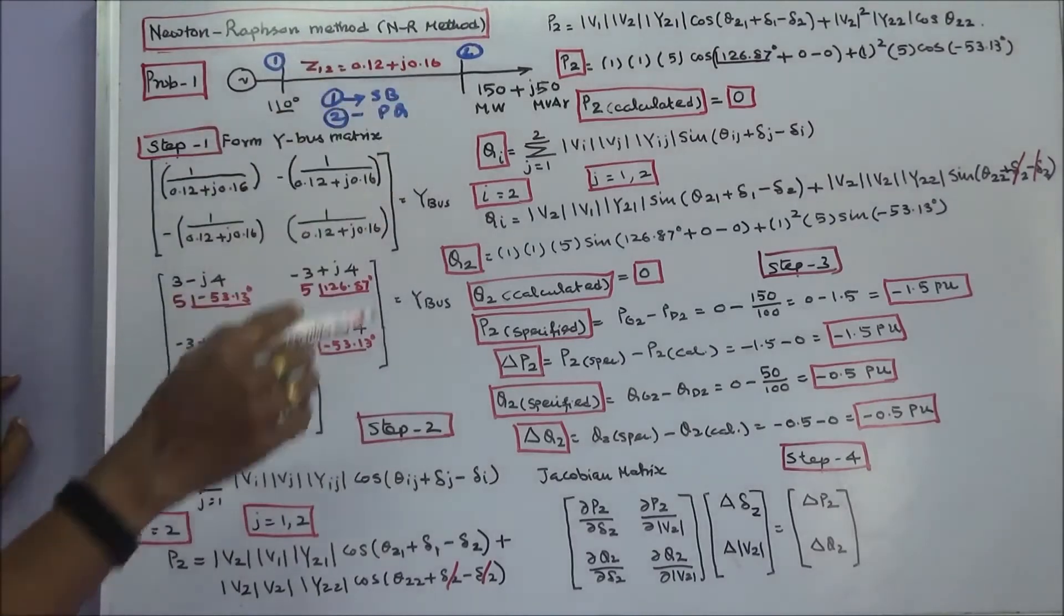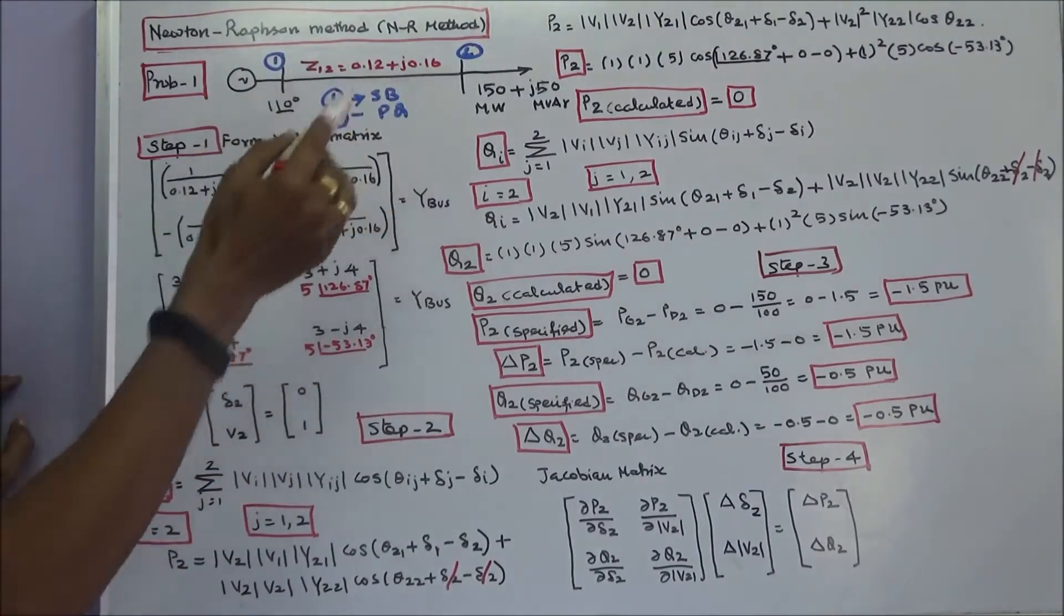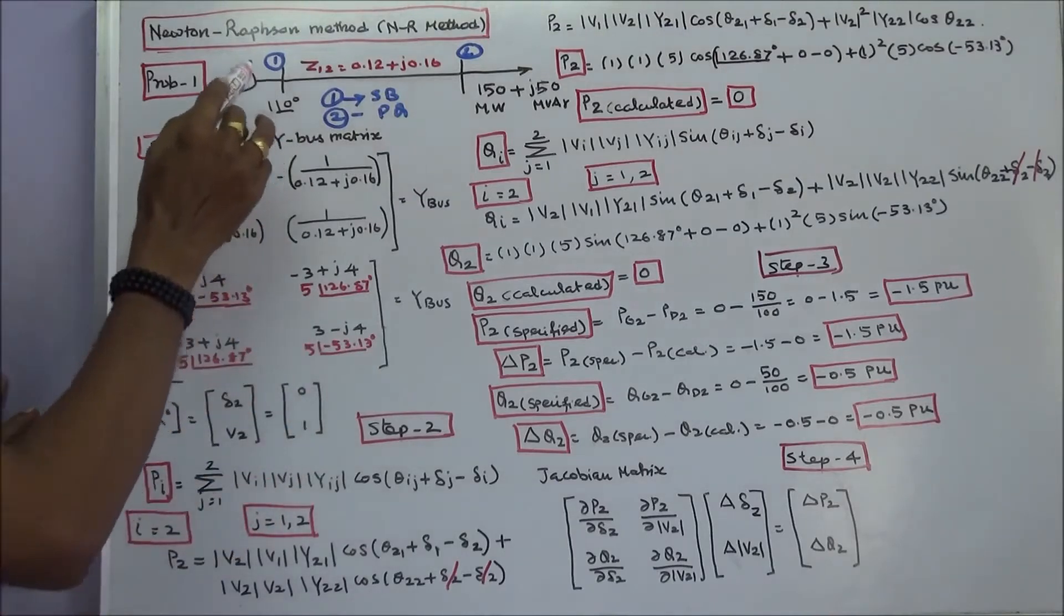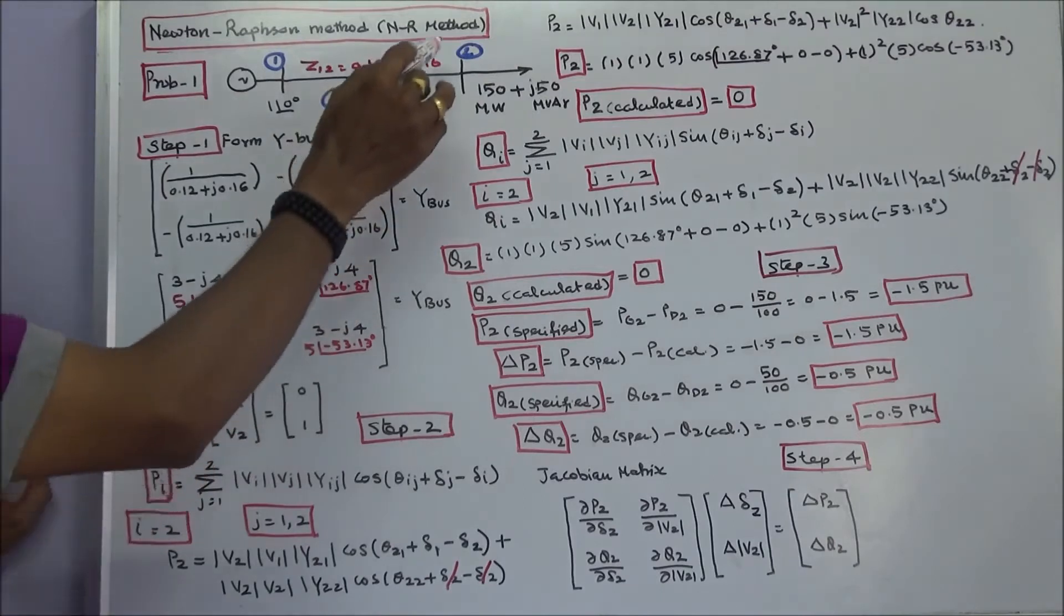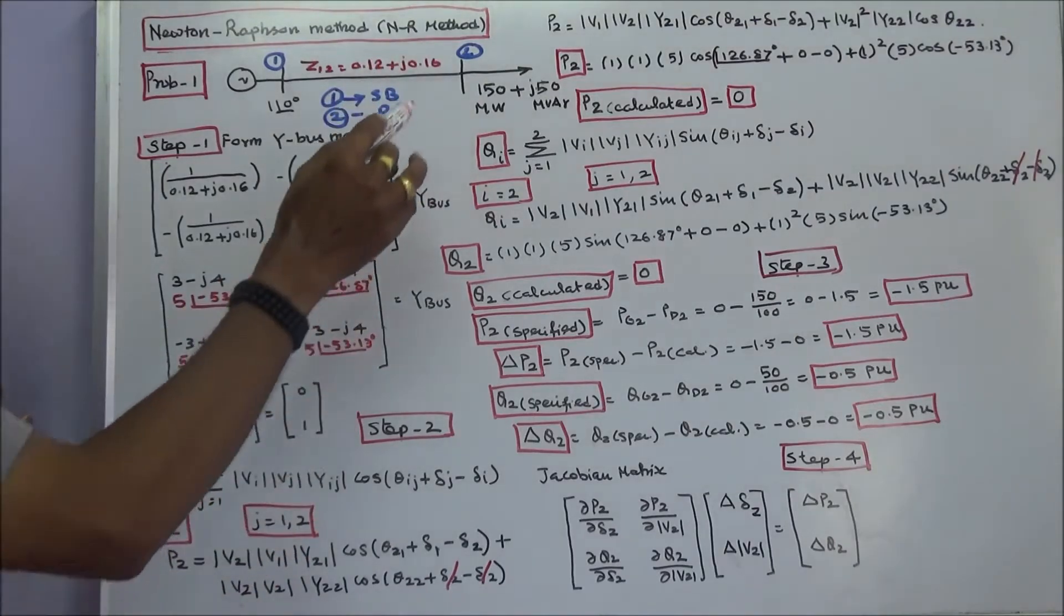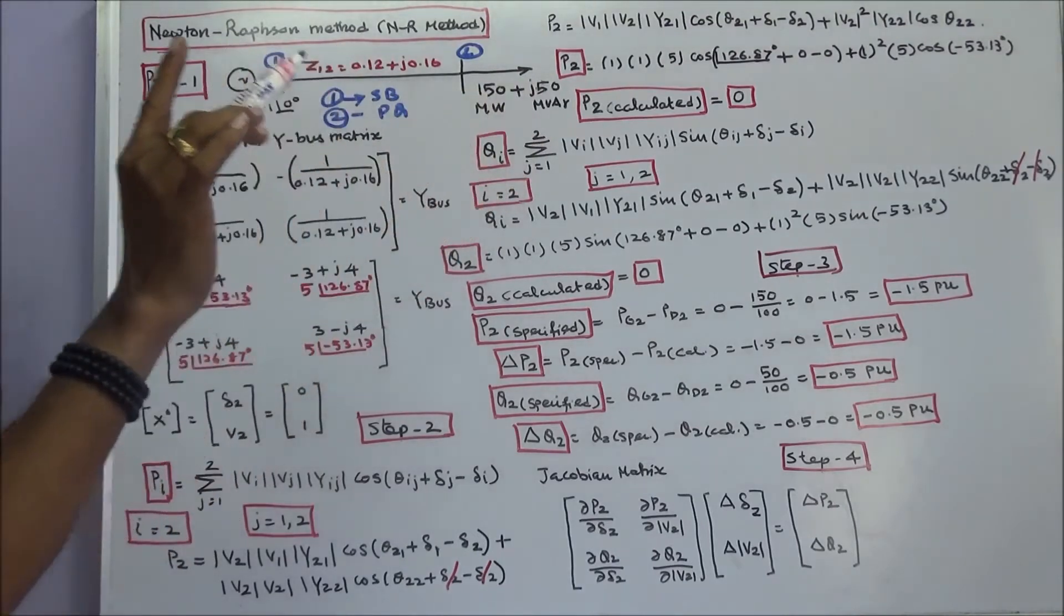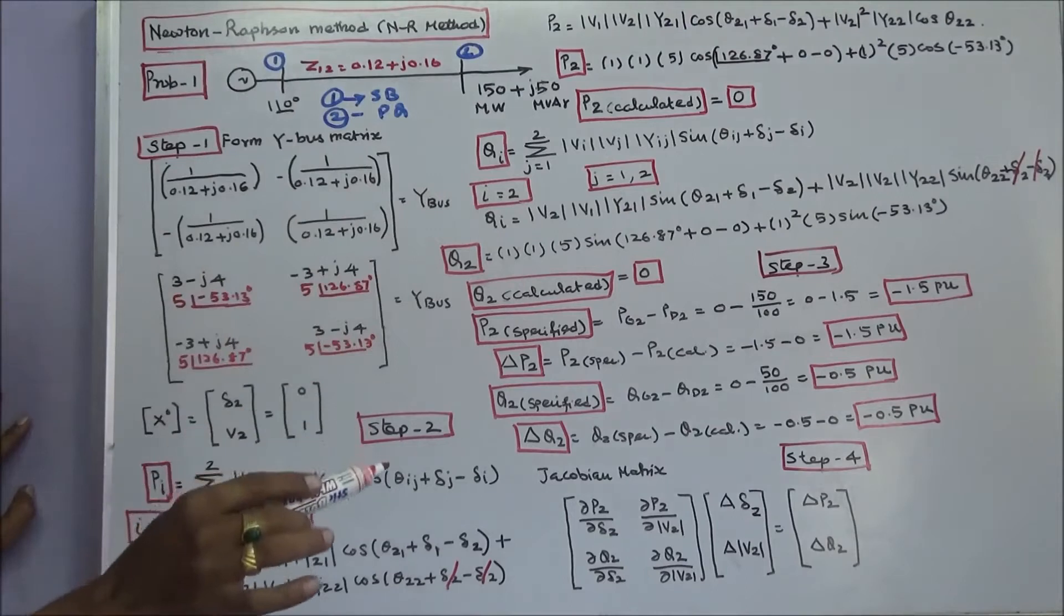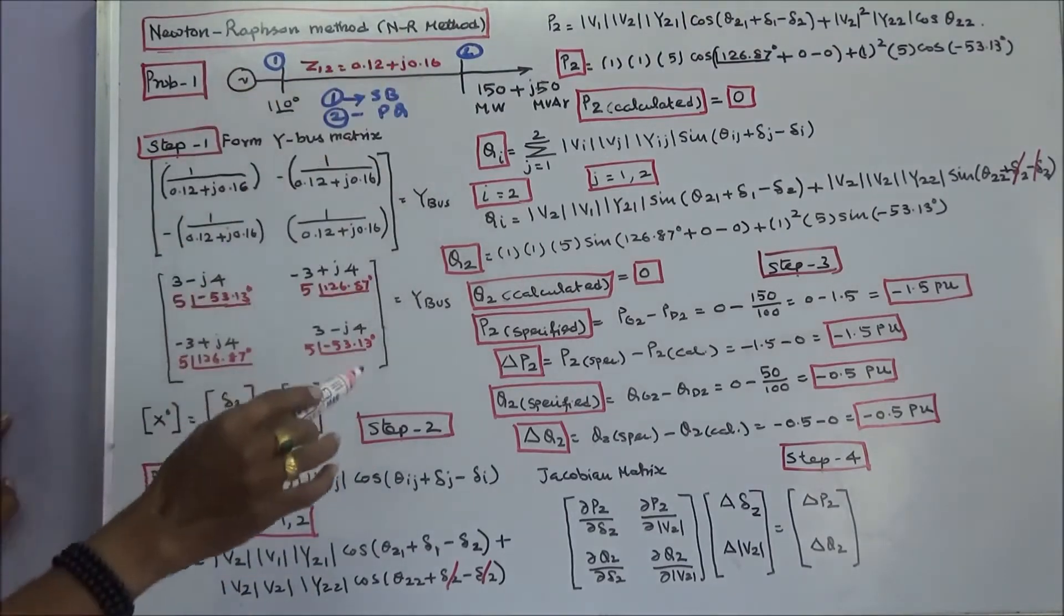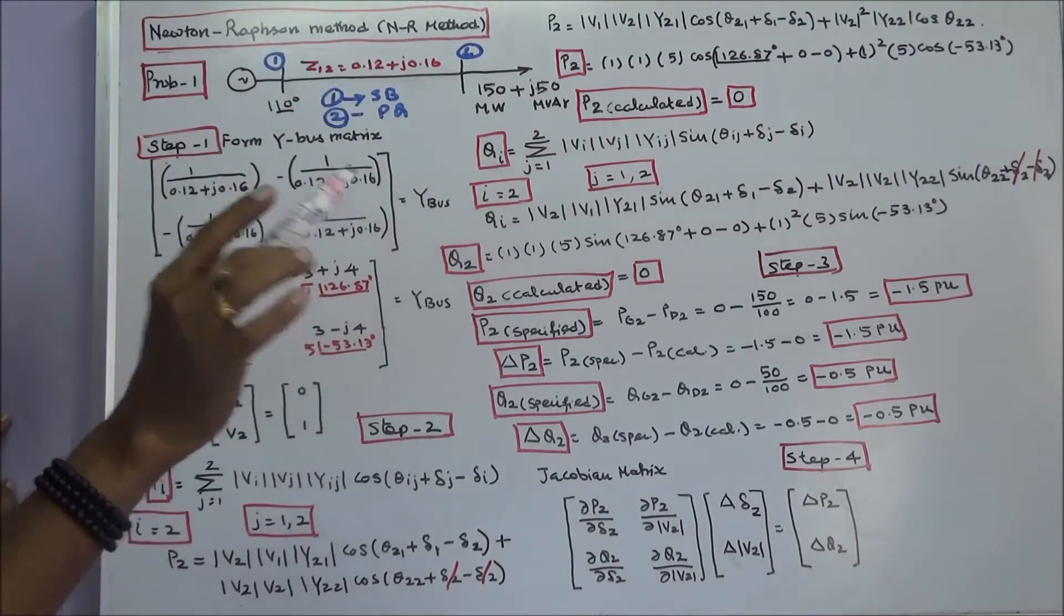This lecture covers a problem using the Newton-Raphson method. This is a 2-bus system. Bus 1 is a slack bus with voltage 1∠0°. Bus 2 is a load bus. The load is 150 megawatts plus j50 MVAR. Base MVA equals 100. Line series impedance is 0.12 plus j0.16 per unit.